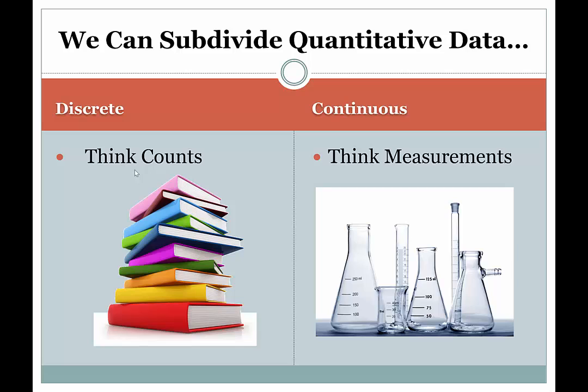So the fact is that discrete measurements or counts or values have gaps between them. So you might be able to have three books in your bag or four books in your bag, but you can't have pi amount of books in your bag. That makes no sense, it's not logical.